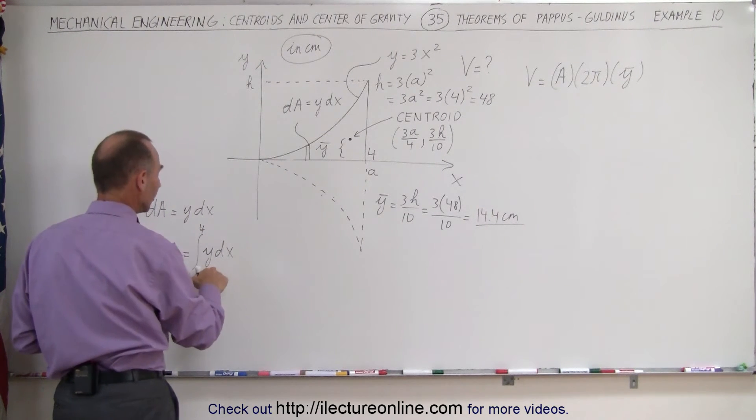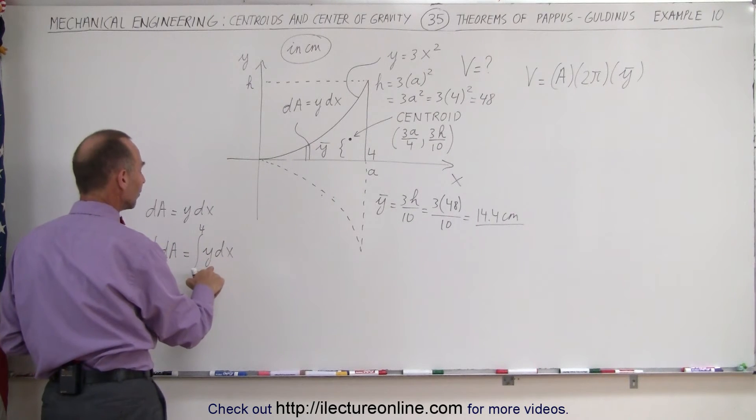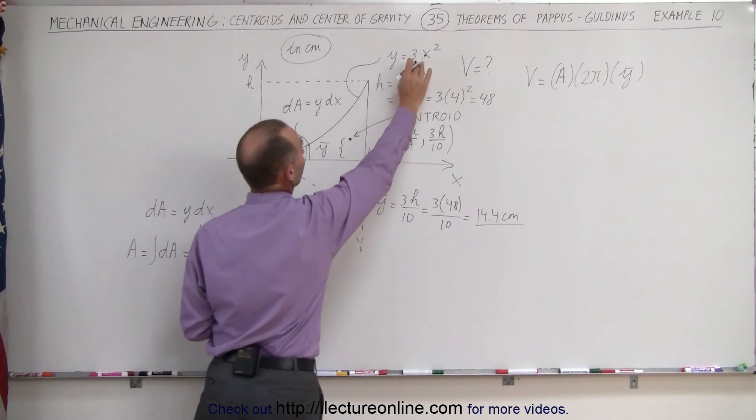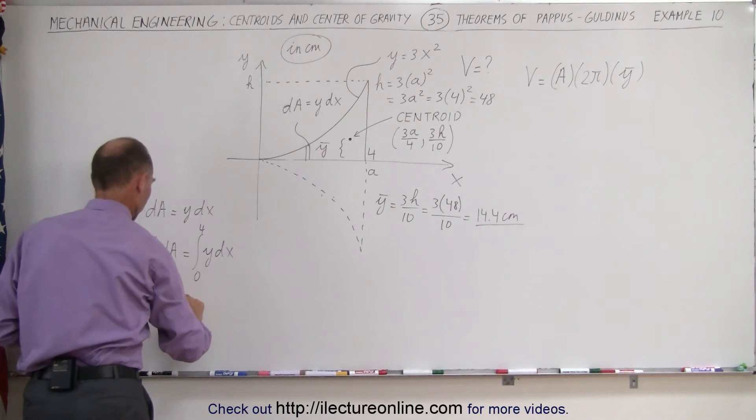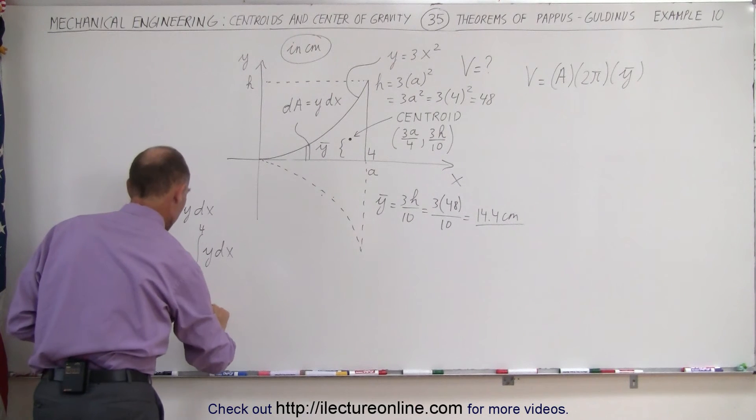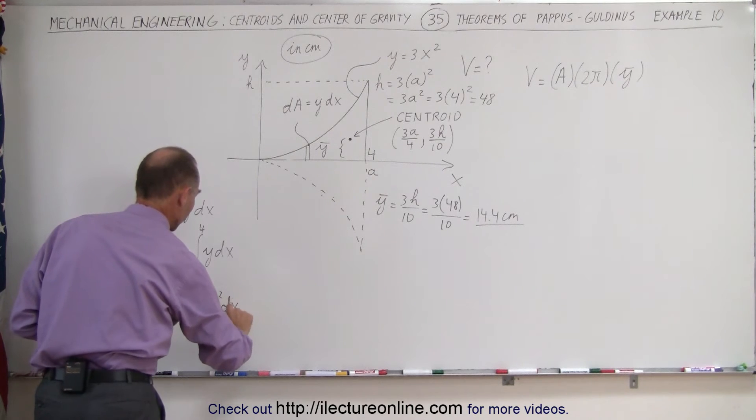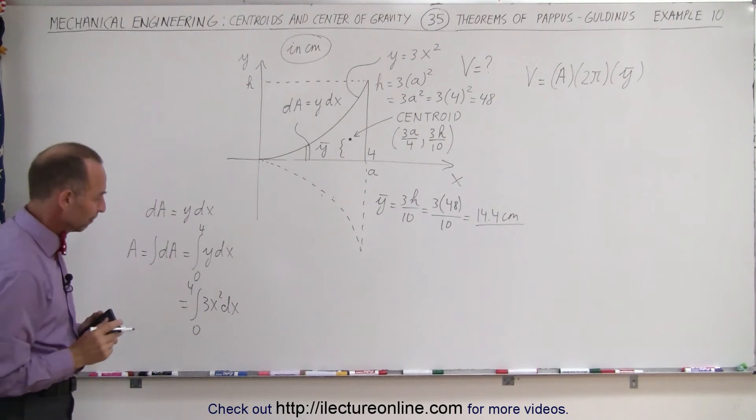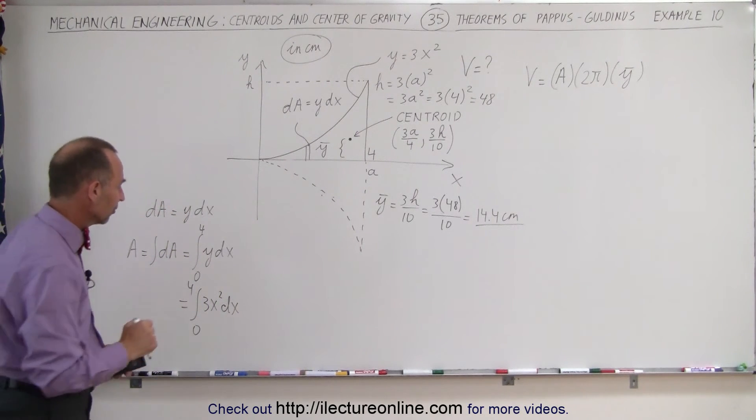Instead of writing y with a dx we need to find what y is equal to in terms of x which can be found using the equation. This is equal to the integral from 0 to 4 of 3x squared dx which is relatively easy to integrate.